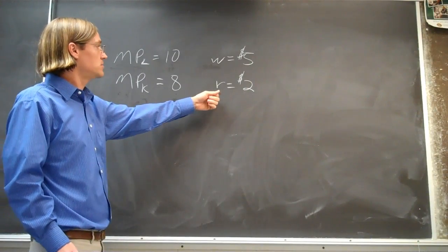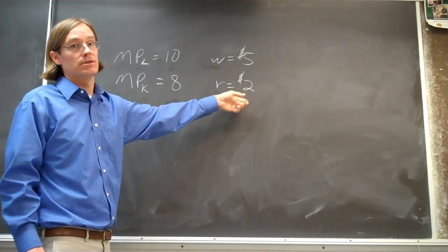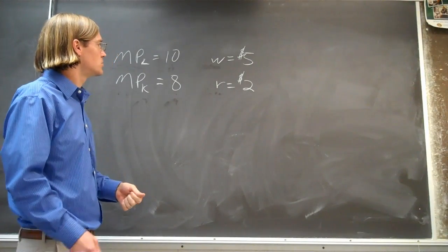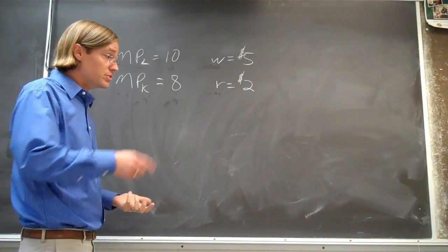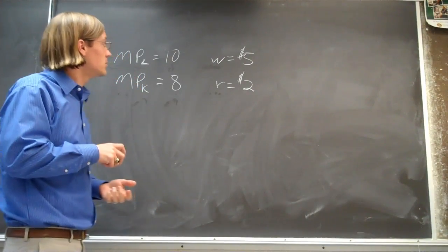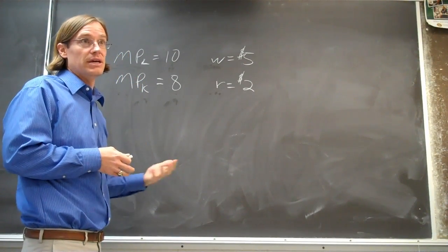Using that next unit of capital, you've got a rental rate of $2. So what should we use? What combination should we use so that as a company we're operating as efficiently as possible?